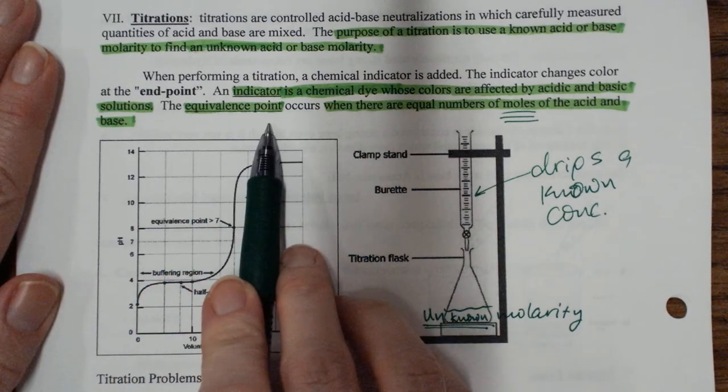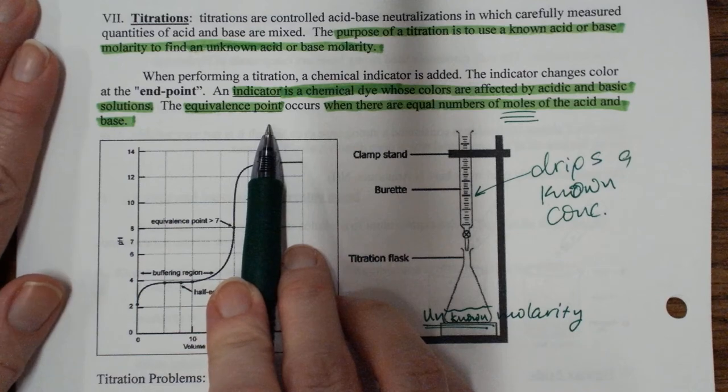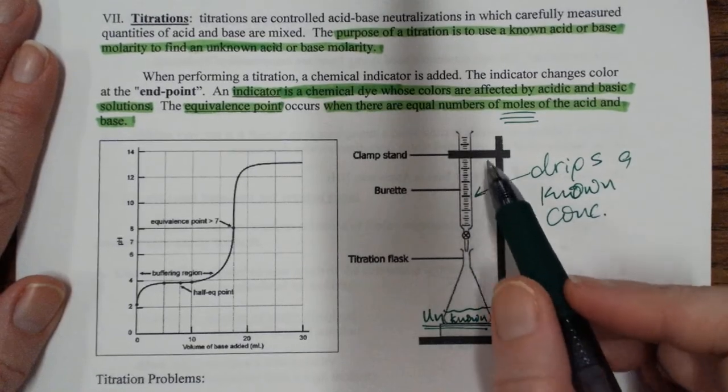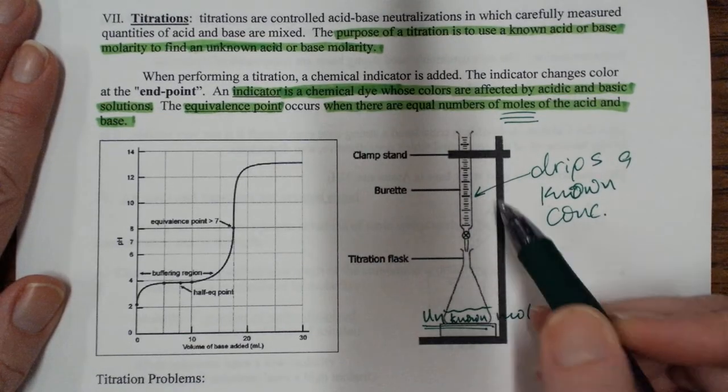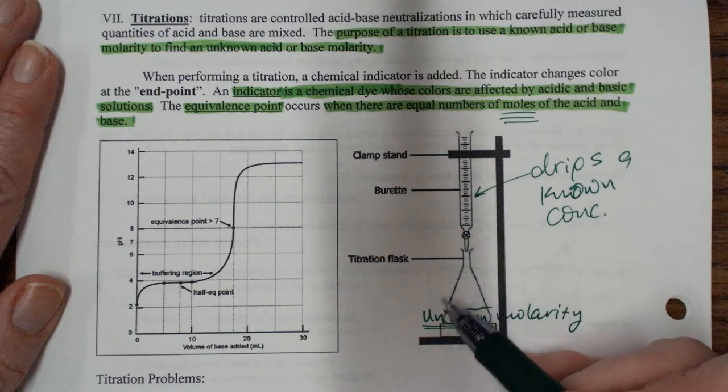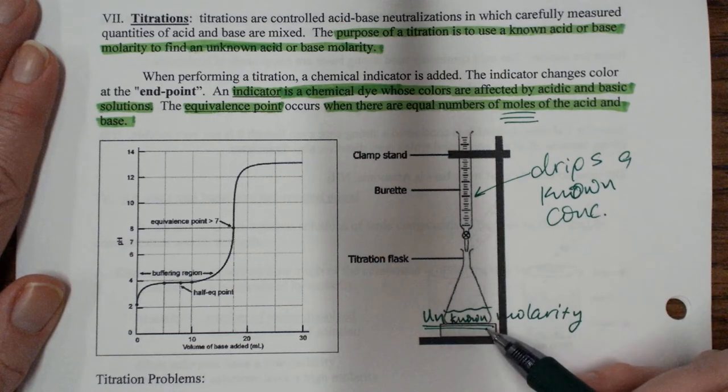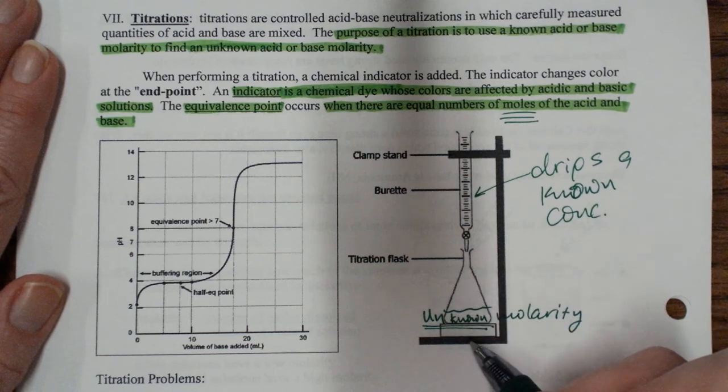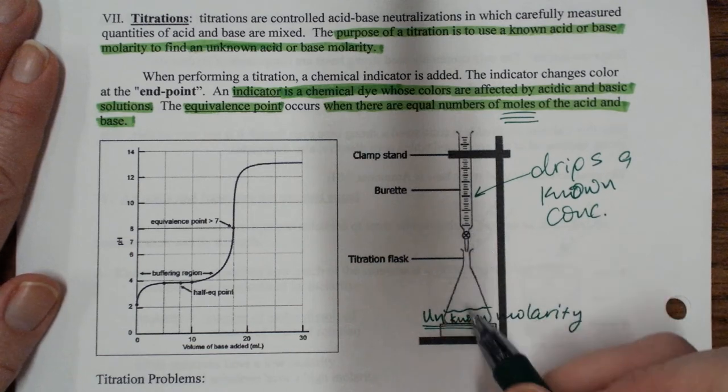I want my equivalence point to show me this has happened. And the equivalence point is when there are equal numbers of moles of acid and base in the solution. After I've dripped in base, I'll have acid and base that will neutralize to form water and a salt. And so I should have a pH of 7 if they're both strong.